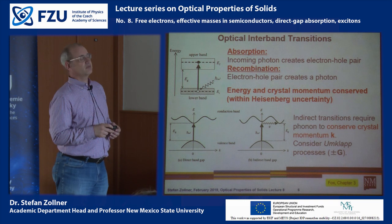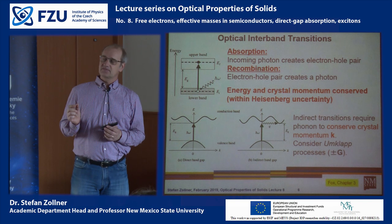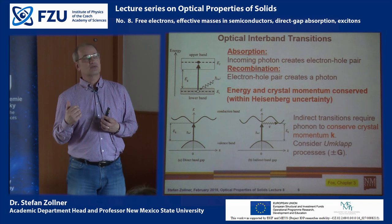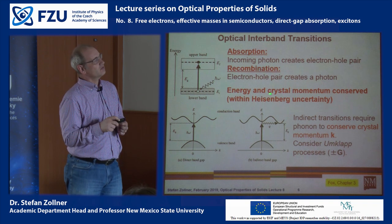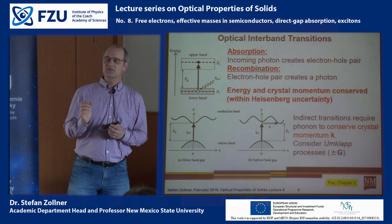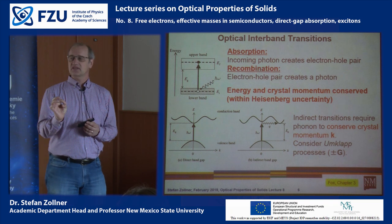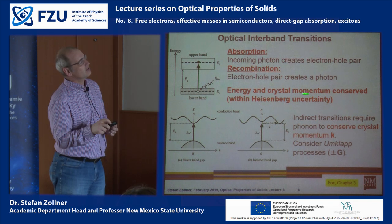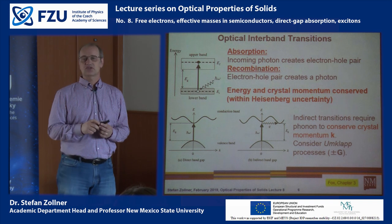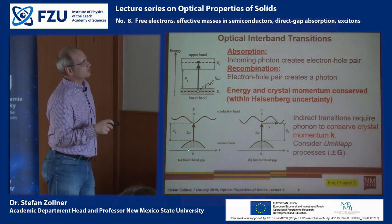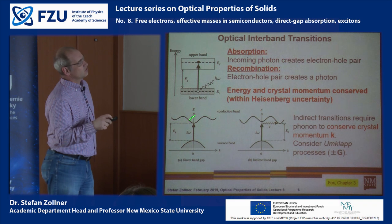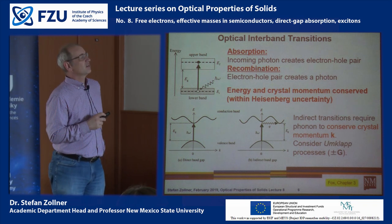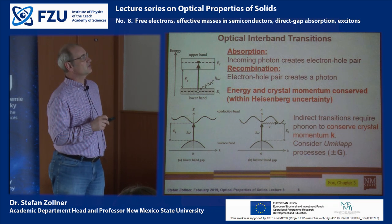Regarding crystal momentum: in an infinite crystal, delta q equals zero, so there is no uncertainty in momentum and we are required to conserve crystal momentum exactly. However, if we have a nanoparticle, its finite size introduces an uncertainty delta q, and therefore in a nanoparticle we can violate crystal momentum conservation. The selection rule that delta k equals zero is strictly true only in an infinitely large crystal.